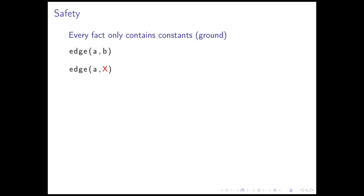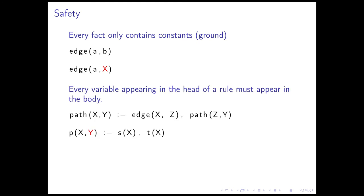We also require that for every rule appearing in a Datalog program, the variables appearing in the head of the rule must also appear in the body of the rule. For example, in P XY, if the Y variable does not appear in the body, this is not a valid rule in a Datalog program. These are the only two restrictions we have on the types of facts or rules which can appear in a Datalog program, and these two rules ensure that the solution of a Datalog program is finite.